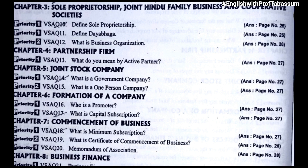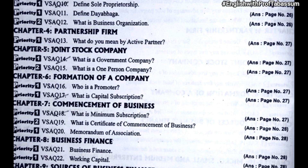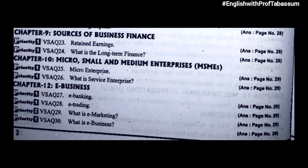Chapter 7, commencement of business: what is minimum subscription; what is certificate of commencement of business; memorandum of association. Chapter 8, business finance: business finance and working capital, you have to describe. Chapter 9, sources of business finance: explain retained earnings and what is long-term finance. Chapter 10, micro, small and medium enterprises: micro enterprise; what is service enterprise. Chapter 12, e-business: explain the terms e-banking, e-trading, e-marketing, and e-business.